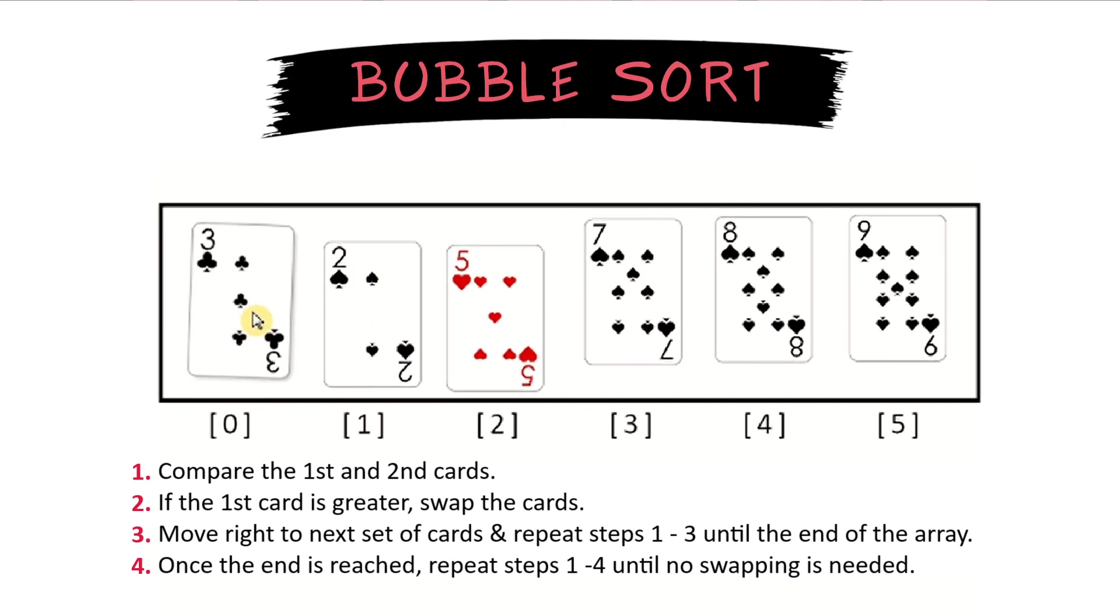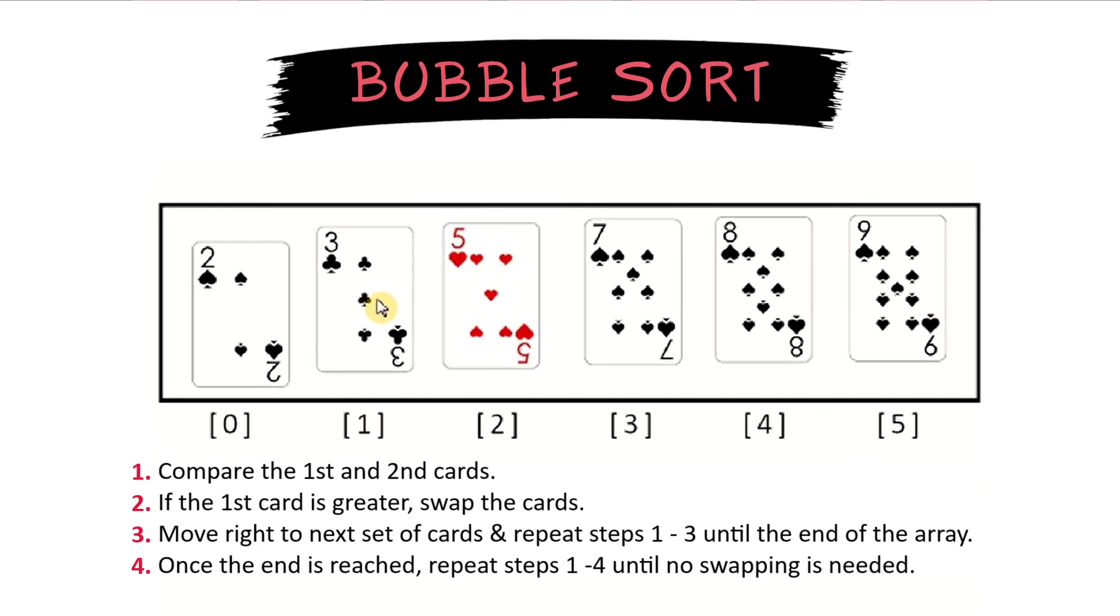Repeat again. 2 and 3. Since 2 is less than 3, we have to swap these 2 cards. Now we check the 3 and the 5. There is nothing to swap there, because 3 is less than 5. And 5 is sorted.